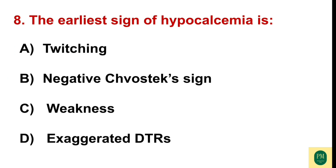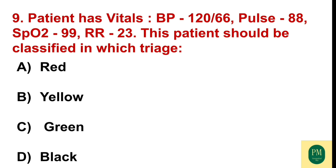The earliest sign of hypocalcemia is: Option A: twitching. Option B: negative Chvostek's sign. Option C: weakness. Option D: exaggerated DTRs. The correct option is Option A — twitching.